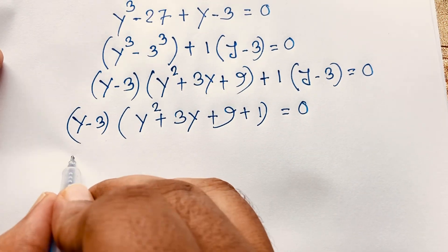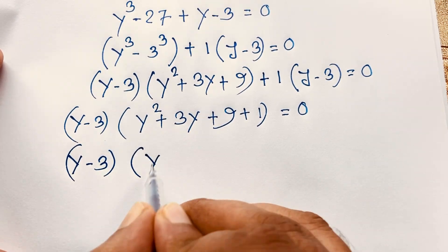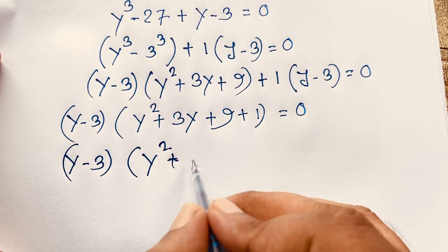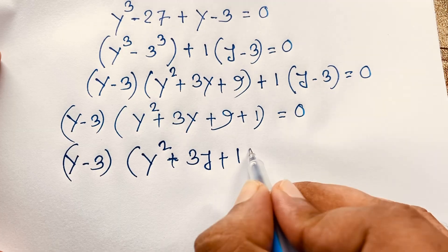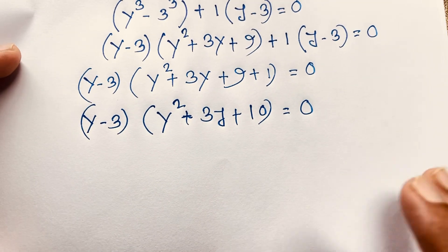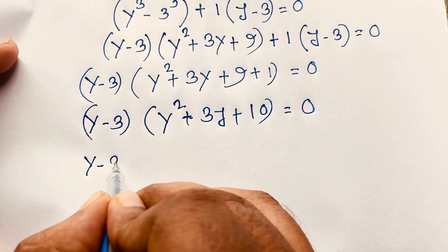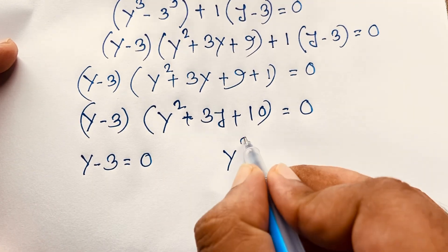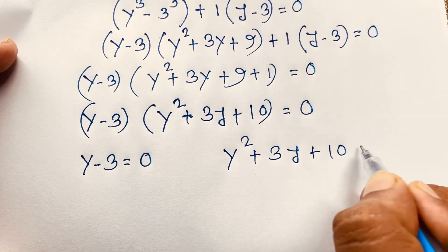So now we have two cases. Our first case is y − 3 = 0, and the other case is y² + 3y + 10 = 0.